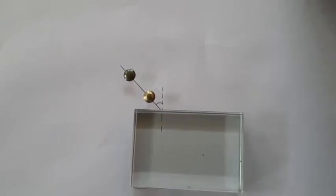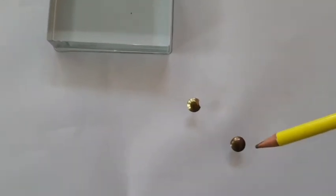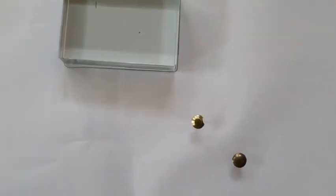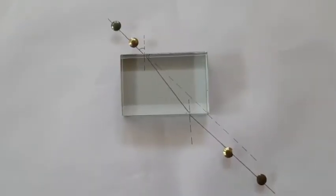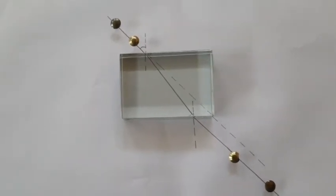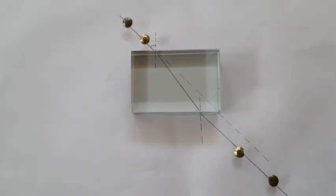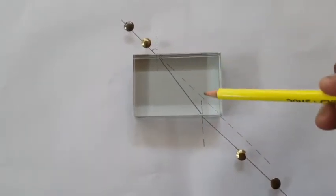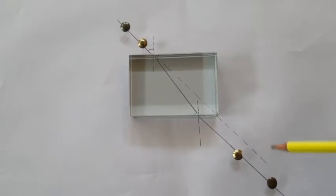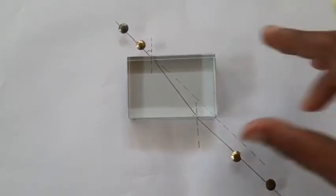So once we have done with this part, now we have to draw the emergent ray. We can mark the position of these two pins and from the glass slab we can draw the emergent ray as you can see. And I have also joined the incident ray with the emergent ray so as to get the refracted ray and the dotted lines show the original path. So now there is a separation as you can see.